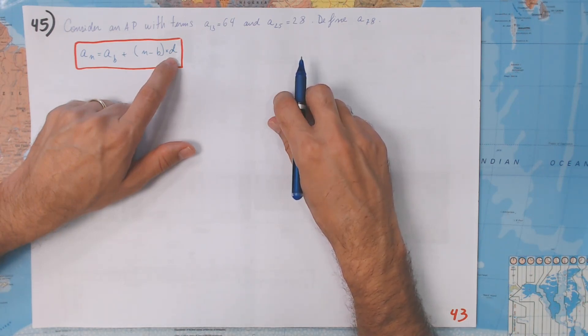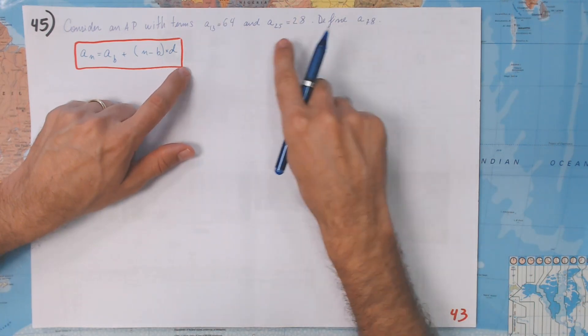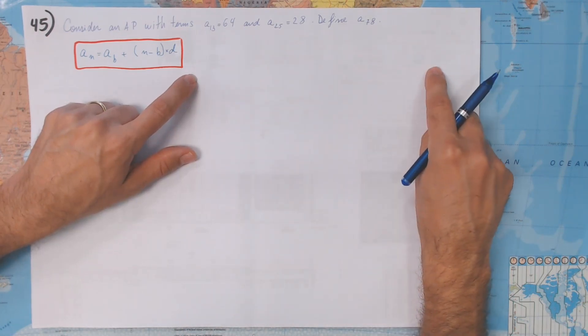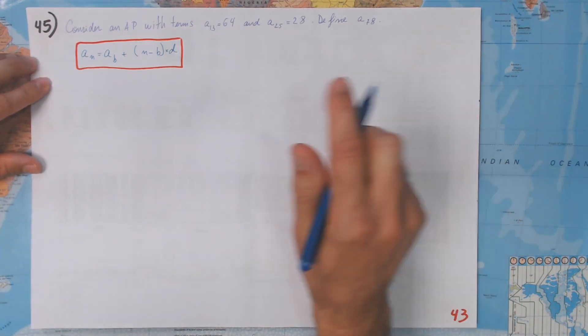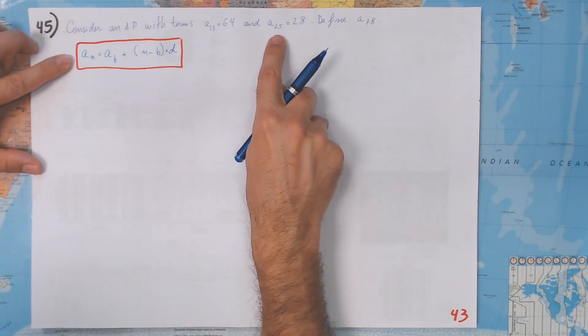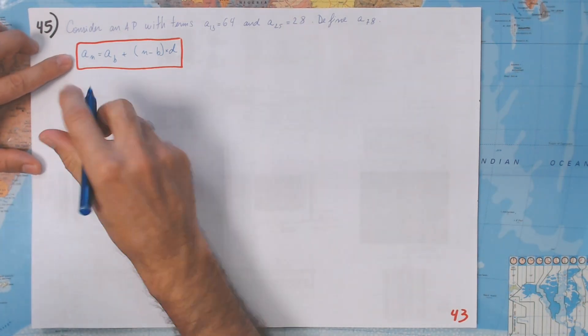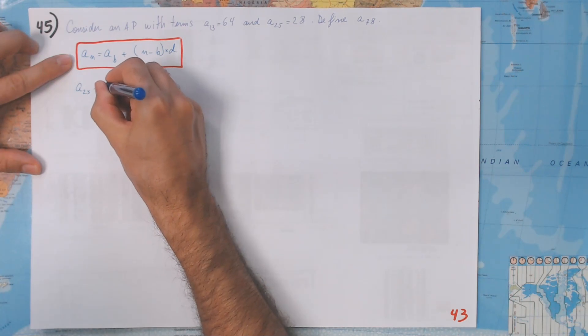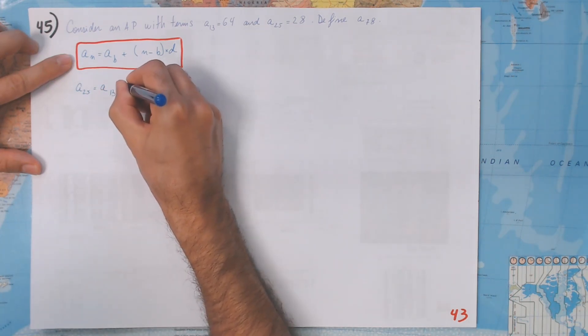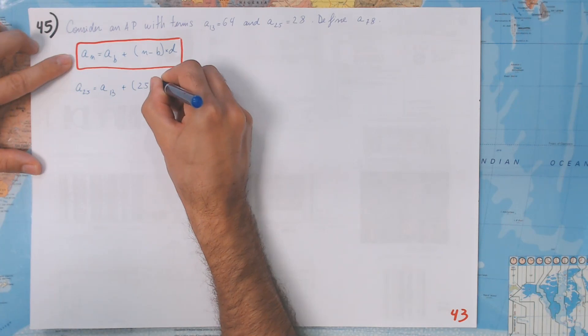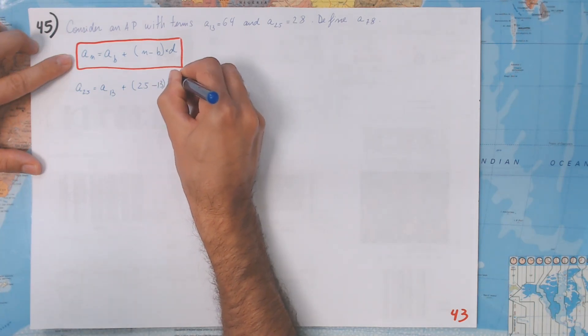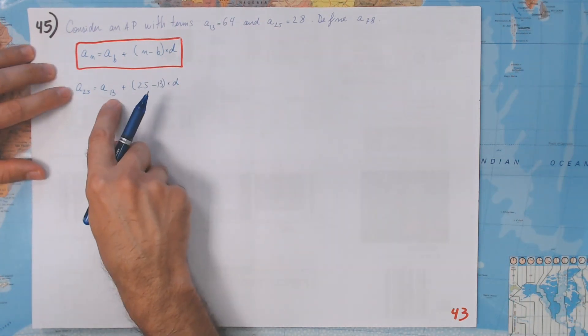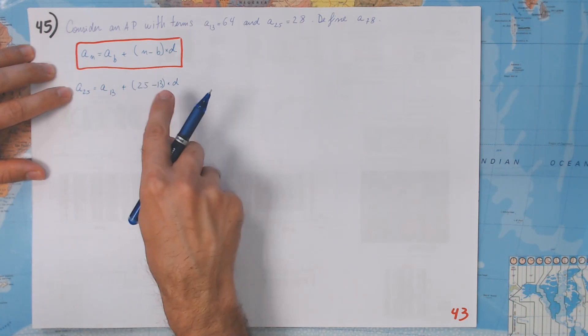That's going to be our path. Let's start to plug in numbers. aₙ, which is a₂₅, is going to be a₁₃ plus 25 minus 13 times D. Now I'm going to do it all at once. I'm going to take a₁₃ to the left and then we're going to divide by 12 already. This is going to be D. D is going to be a₂₅, which is 28, minus 64.